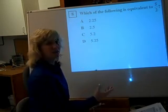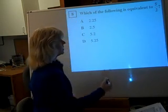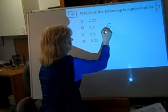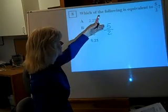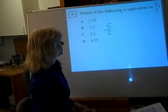We can change any fraction to a decimal by just doing the division that's involved. 5 halves is the same as 5 divided by 2.